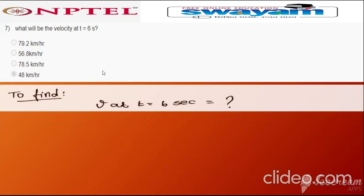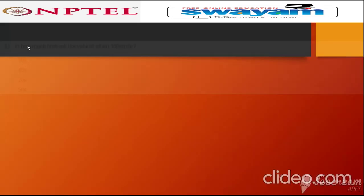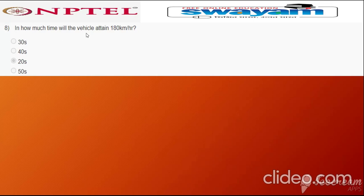Question seven: what will be the velocity at t = 6 seconds? Using v = u + at: v = 10 + (2 × 6) = 22 m/s. Converting to km/h by multiplying by 3600/1000 gives 79.2 km/h. The correct answer is option A: 79.2 km/h.